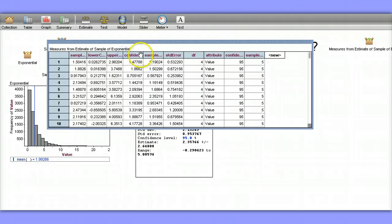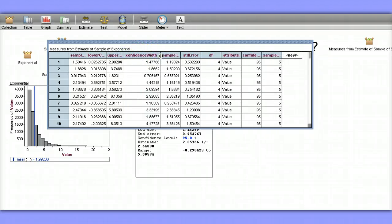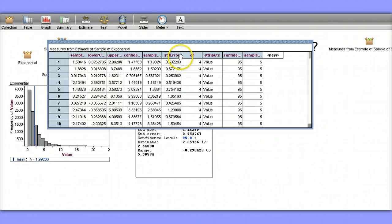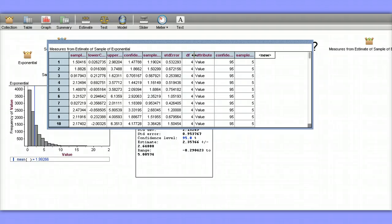The confidence width, the sample standard deviation, the standard error. The degrees of freedom is 4 because our sample size was 5, and we would do 5 minus 1. The data that we were collecting was from this attribute called value. The confidence level was 95% and our sample size was 5.